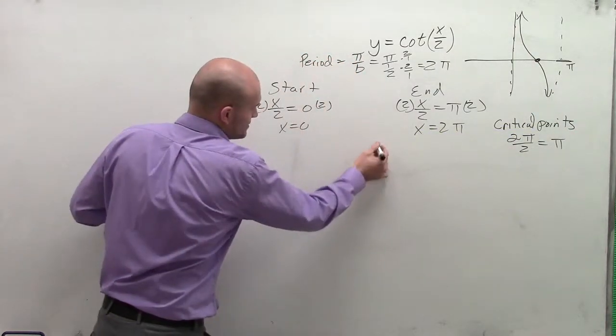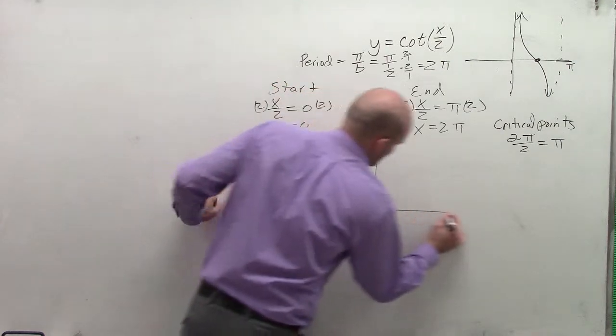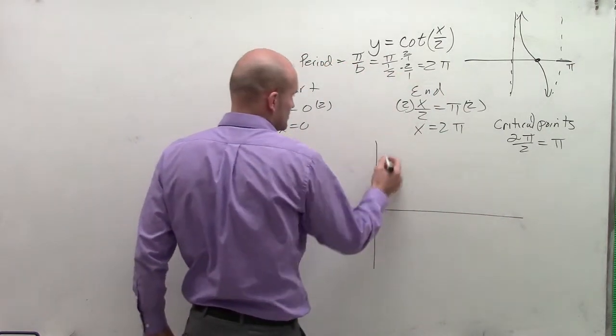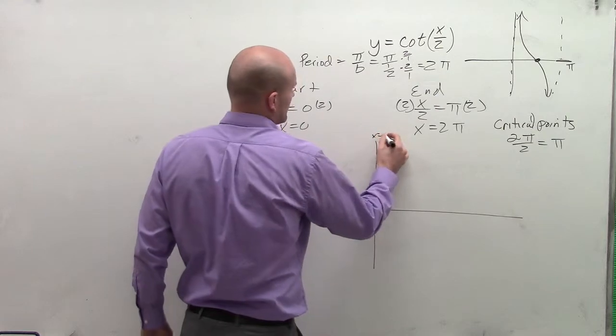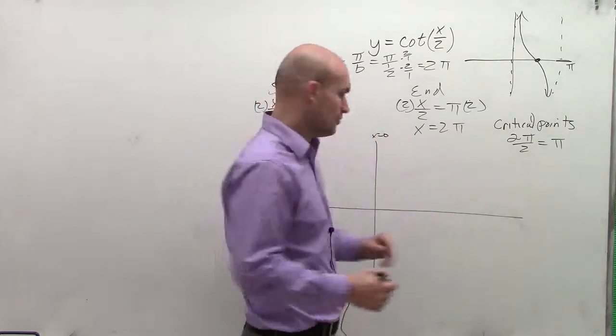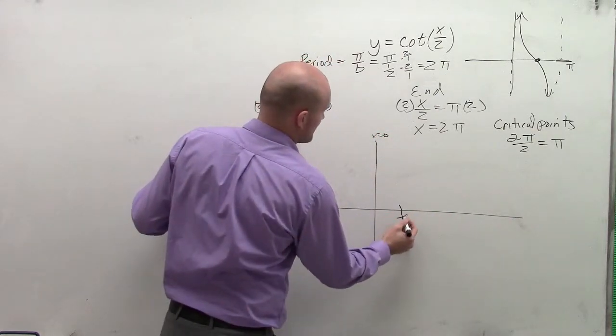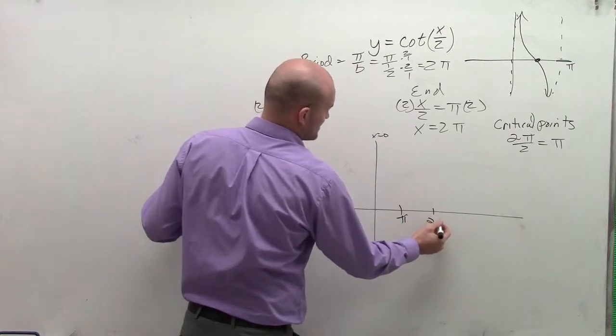So in graphing the cotangent graph, we still have our y-axis, which is at when x equals 0. But we know our next critical point is going to be at pi. The next critical point is at 2 pi.